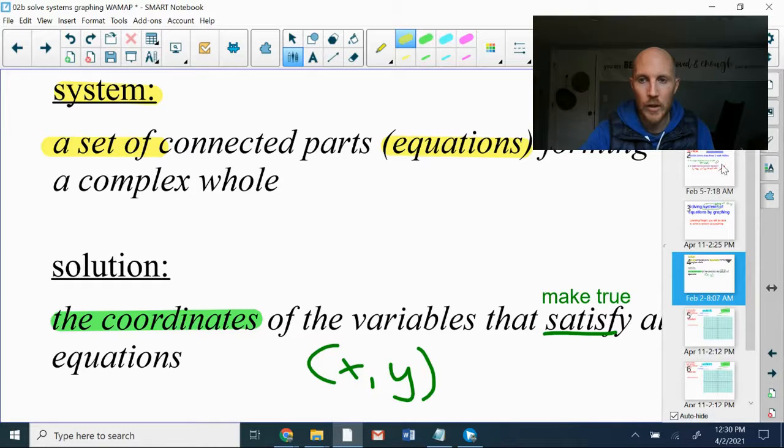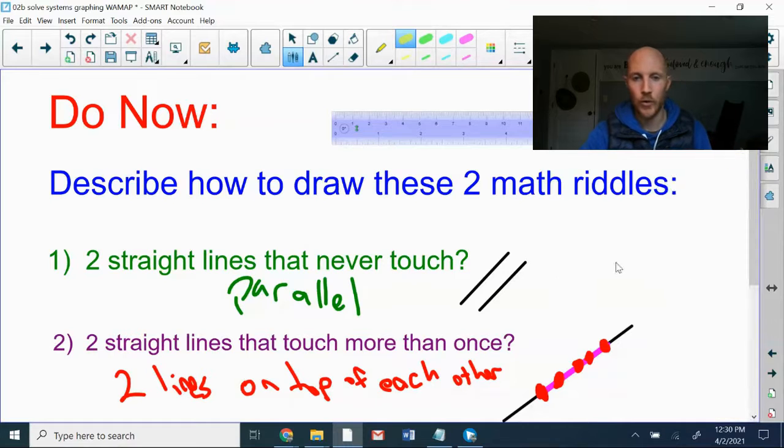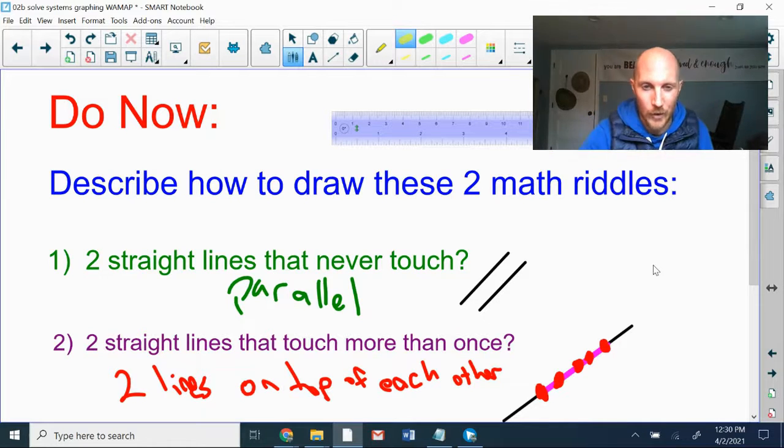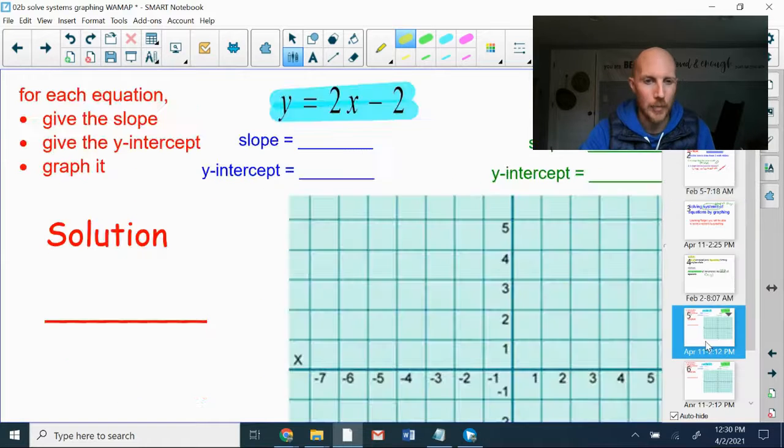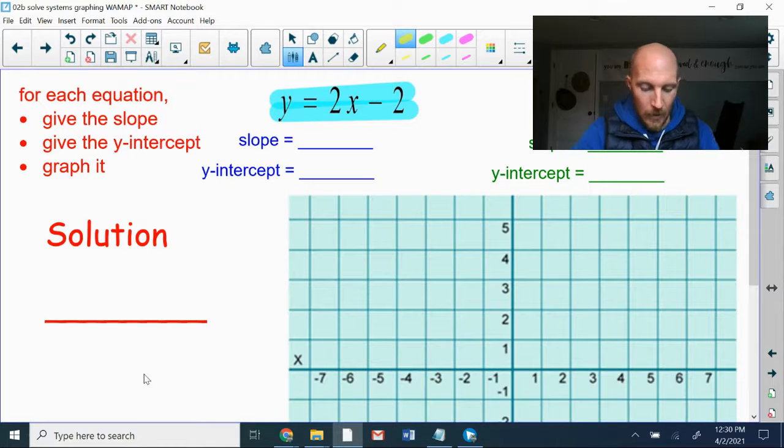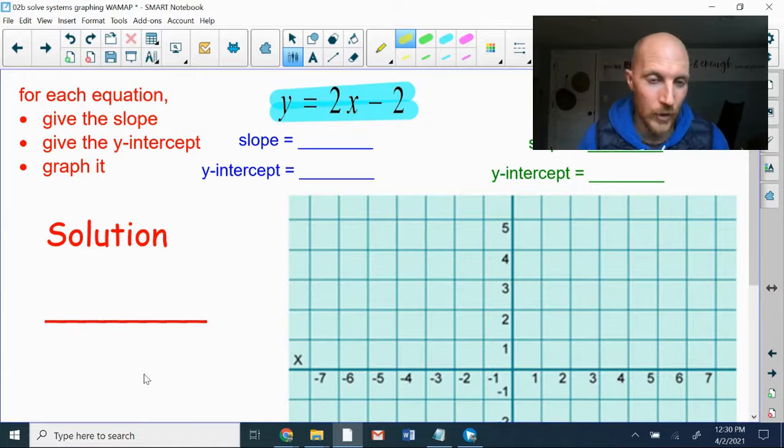So we're going to see both of these situations from the do now show up on occasion. You can have two lines that cross and you'd be like, hey, they cross. There's the solution at the coordinates right there. But each of these two situations can also happen. You could get parallel lines. You could actually get the same line that you draw on top of itself again. And so what do we do when that happens?